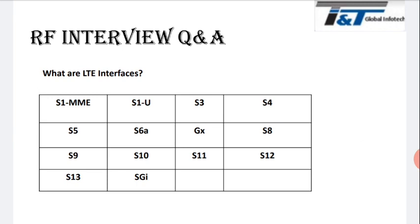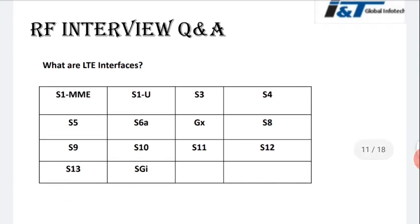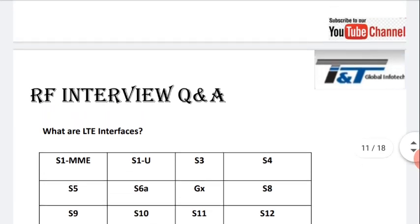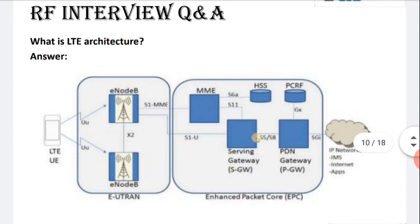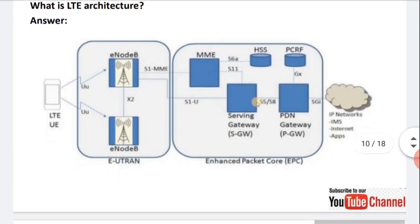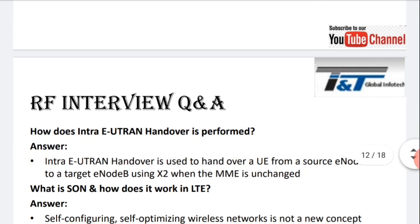For the interfaces, you need to remember: S1-MME, S1-U, S3, S4, S5, S6a, S8, S10, S11, S12, S13, and also SGi and Gx. You have to remember from where to where each interface is used, so that from the architecture you can recall it correctly.